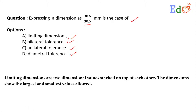Limiting dimensions are two dimensional values stacked on top of each other. Here, the dimensions show the largest and smallest values allowed. So here, 30.6 by 30.5 — this is the largest value and this is the smallest value. The correct option is a) limiting dimension. Thank you.